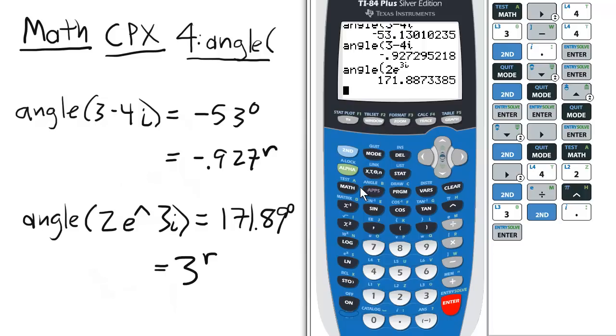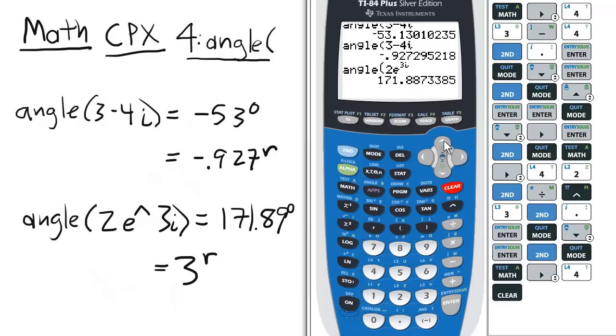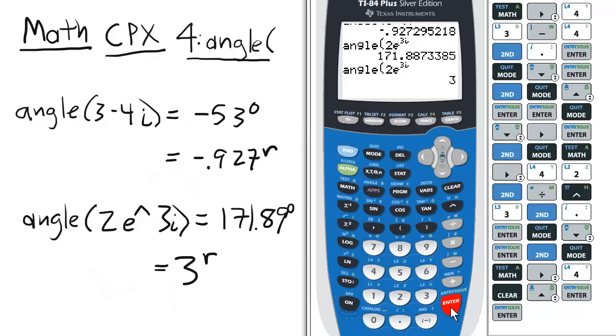Now we can change the mode back to radians. After we've changed the mode to radians, we can just scroll up to do the problem again in a different mode, and notice the answer is 3.